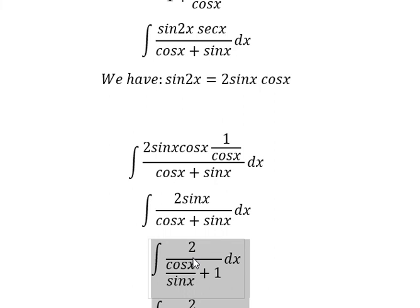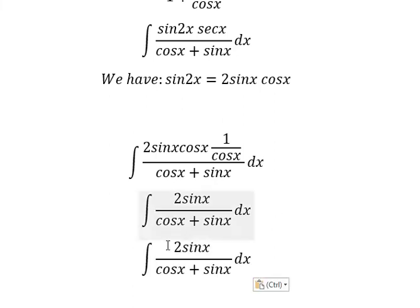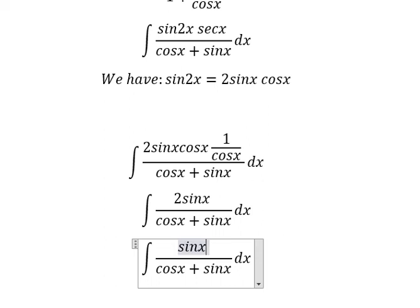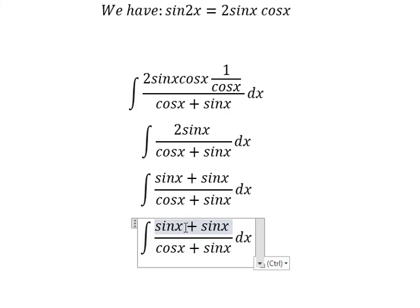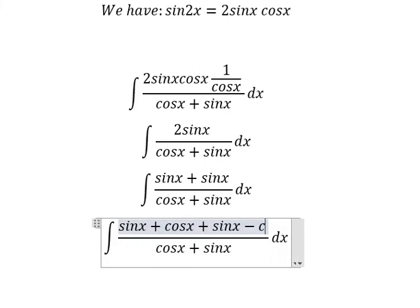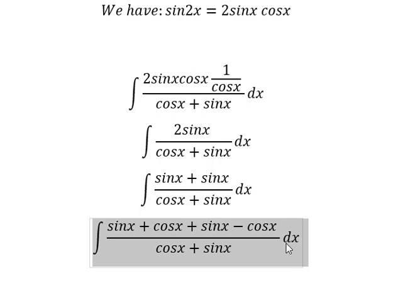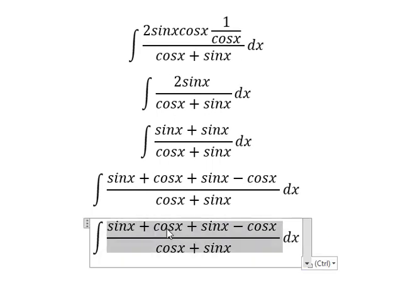Now we go to the second part. We can split it as sine x plus sine x. And now we need to add cos x, then minus cos x. So we get sine x plus cos x divided by this one, giving us number 1.